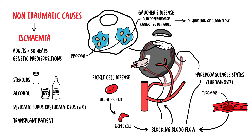Those traumatic and atraumatic causes of osteonecrosis could be the same for any joint or bone, including the shoulder, the femoral head, the knee, or ankles. However, we are going to focus on the hip joint and the femoral head.